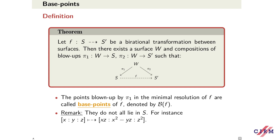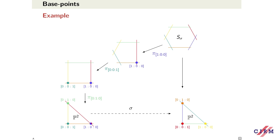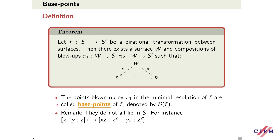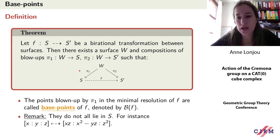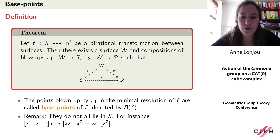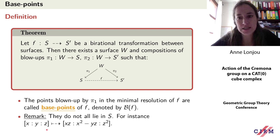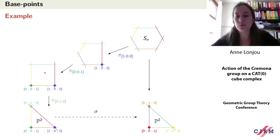This theorem allows us to define the base points of f: they are the points blown up in the minimal resolution of f on the source side by p1. The base points of sigma were [0:0:1], [0:1:0], and [1:0:0]. Note that base points need not lie in the original surface P2 — they can lie on blow-ups of it. For instance, a point not in P2 can appear on the exceptional divisor after a blow-up, and such a point is also called the blow-up of the original point.